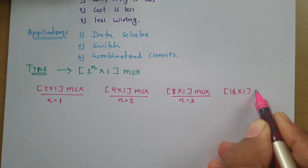One more IC available with MSI scale is the 32×1 MUX, where n equals 5, giving 5 selection lines, 32 inputs, and 1 output. These are the versions available with MSI scale ICs, and using them many combinational functions can be implemented with a single IC.